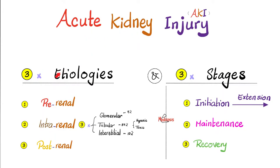Acute kidney injury has three causes: pre-renal, intra-renal, and post-renal. Pre-renal is the most common. For intra-renal, the cause could be a problem in the glomerulus, the tubule, or the interstitium — and sometimes the renal vessels. Causes of tubular disease are hypoxic or toxic: not receiving enough blood, or being damaged by a toxin such as a drug, a heavy metal, or a radiocontrast dye.